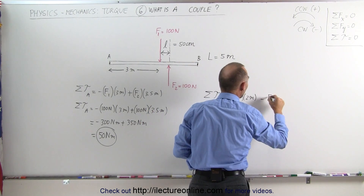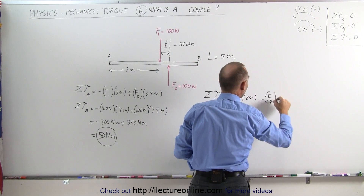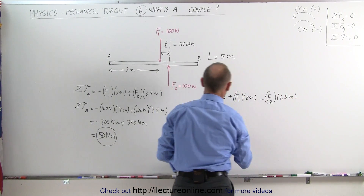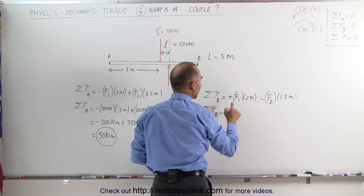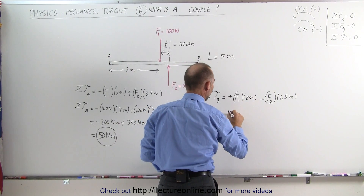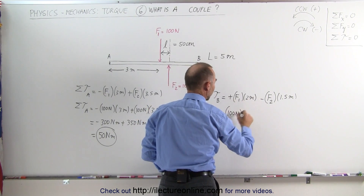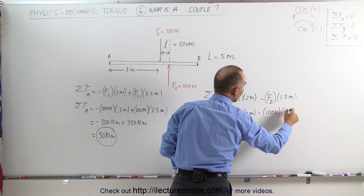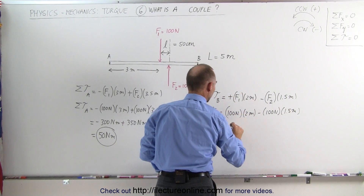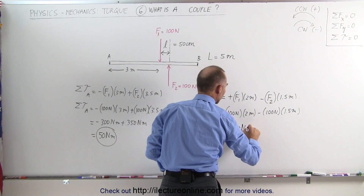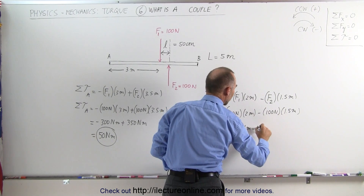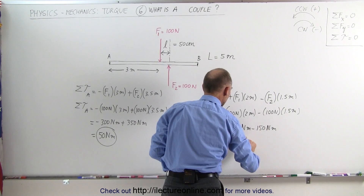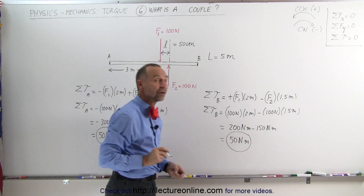Because F2 causes a clockwise motion about point B, that would be a negative torque — minus F2 multiplied times the distance, in this case 1.5 meters. The sum of all the torques about point B, plugging in the values: 100 Newtons times 2 meters, minus 100 Newtons times 1.5 meters. This is equal to 200 Newton meters minus 150 Newton meters, which is equal to 50 Newton meters.